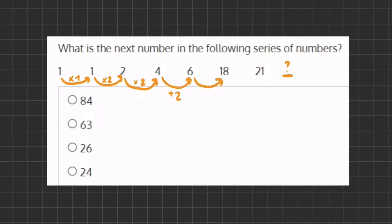When we move from 6 to 18 it seems like we're multiplying by 3. And when we move from 18 to 21 it seems like we are adding 3. So when we look back at our pattern it seems like we're having a combination of multiplication and addition.